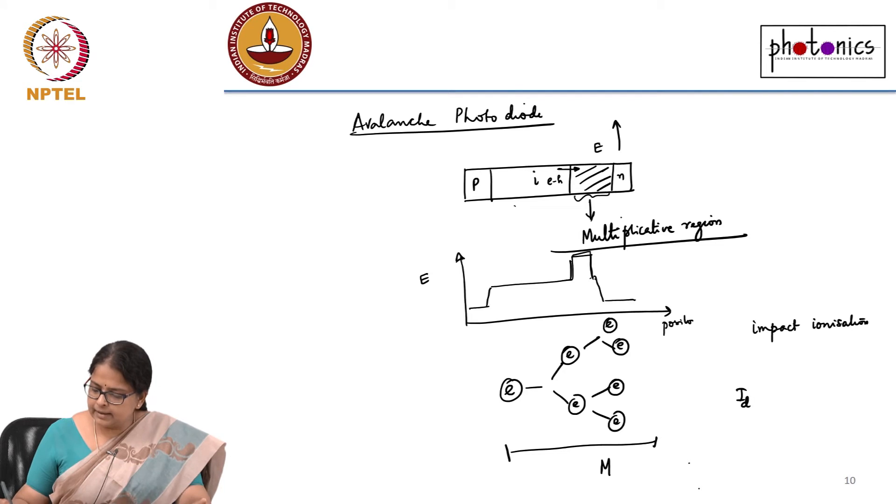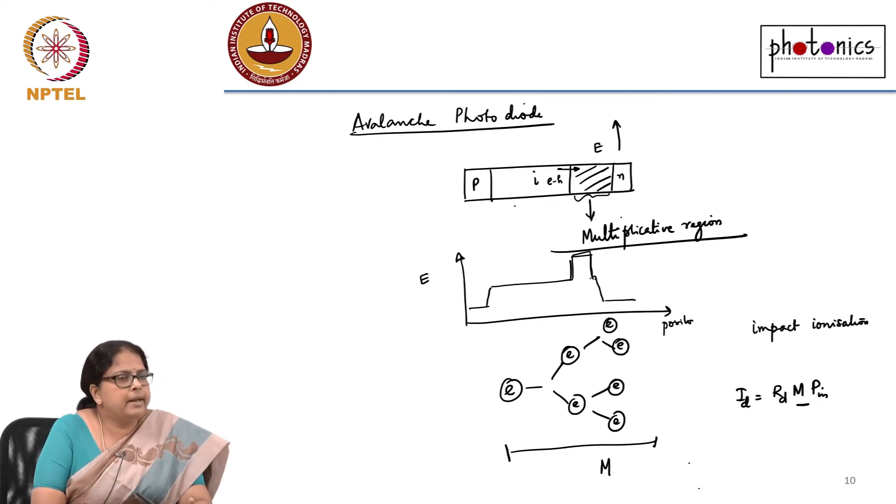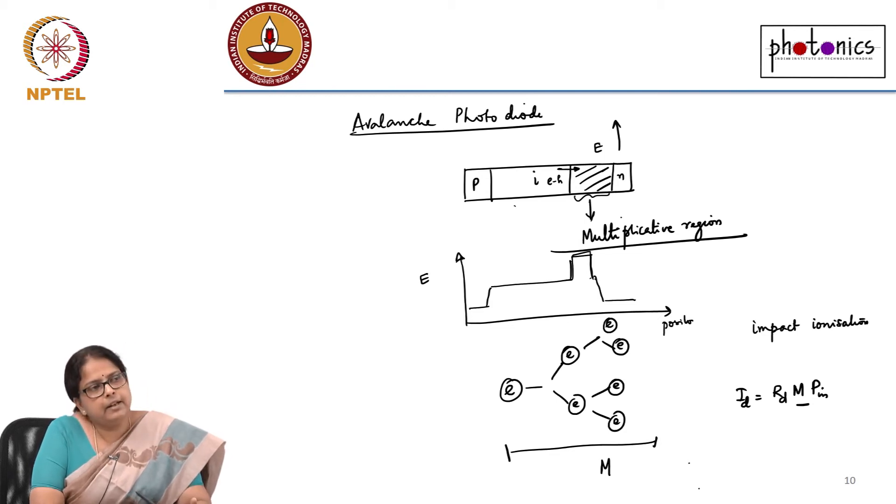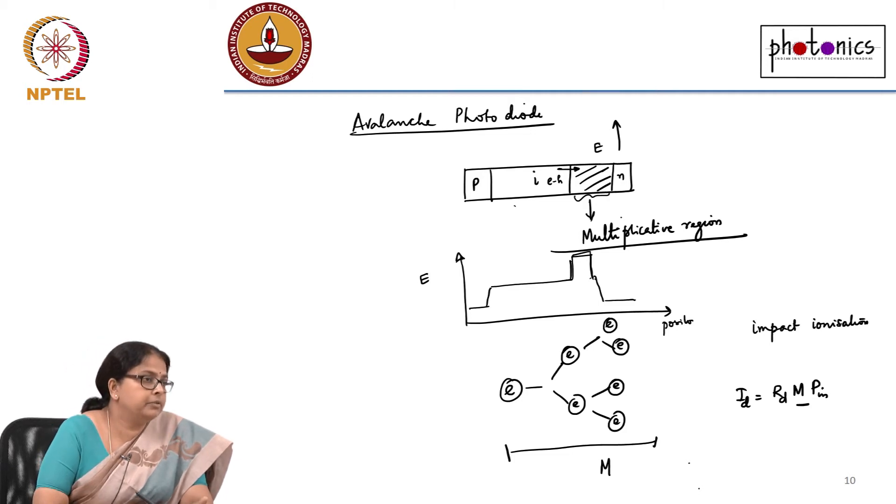My ID is actually Rd times M times Pn, where M is that multiplicative factor. You can make avalanche photodiodes which can have multiplicative factors even of the order of 10 power 3, 10 power 4 and so on.